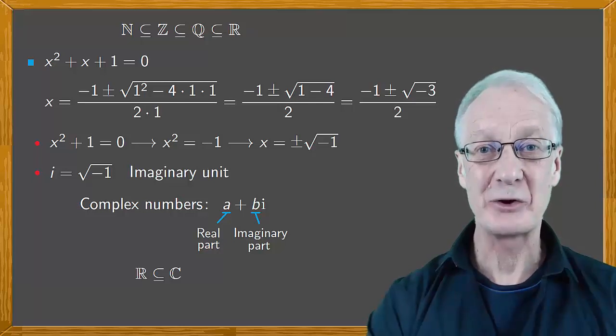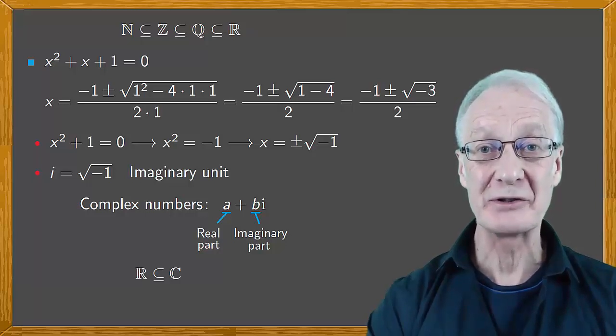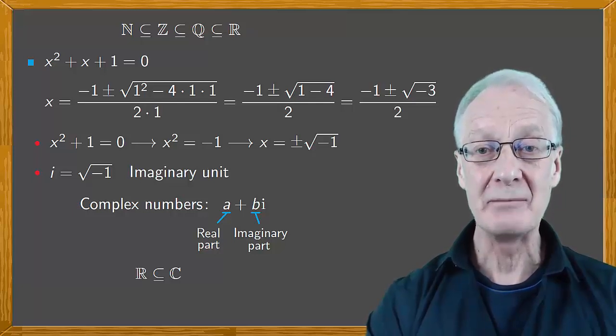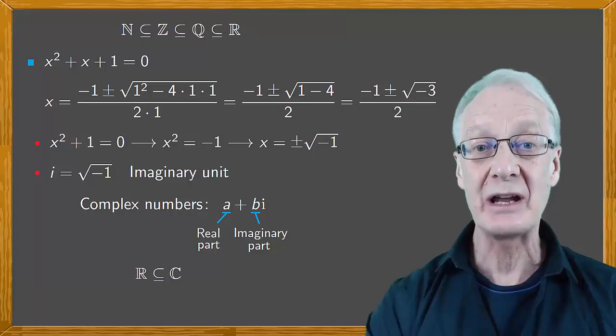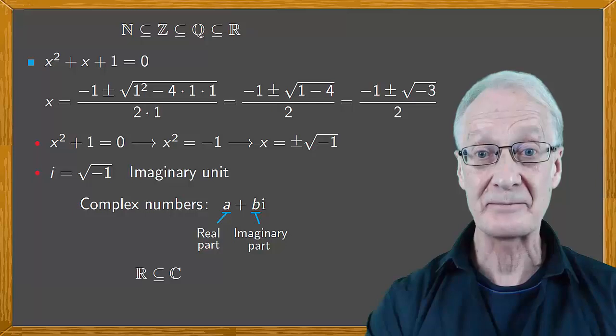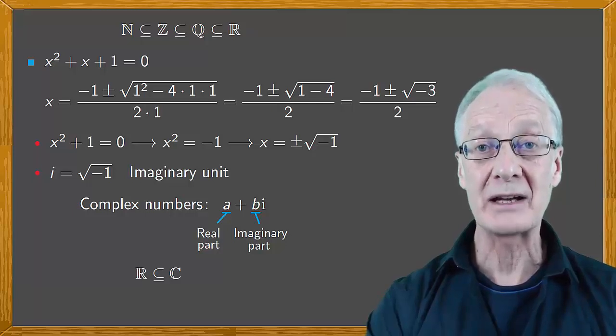You may ask, what are complex numbers good for? When they were first introduced, they were considered to be scandalous, much more so even than negative numbers. Over time, though, they were accepted because of their utility, not only in solving equations in pure maths, but in physics. For instance, they're used in the theory of circuits that involve alternating currents. They're another example of a pure mathematical concept that later found an important use in the real world.